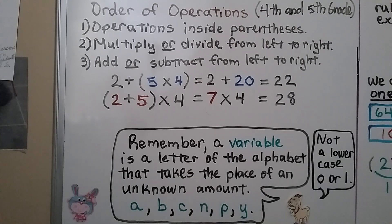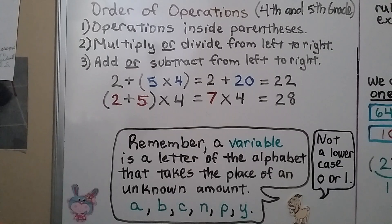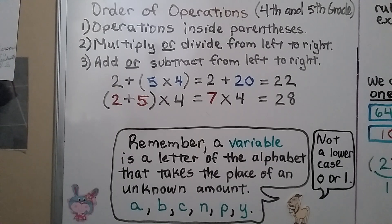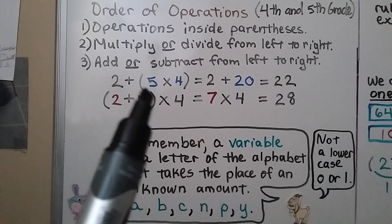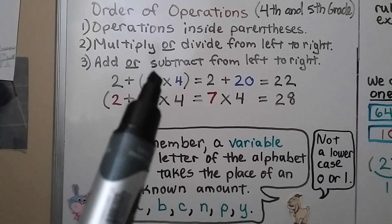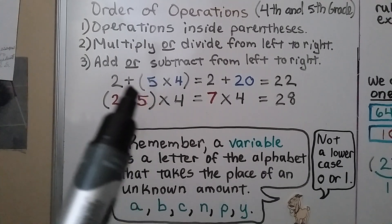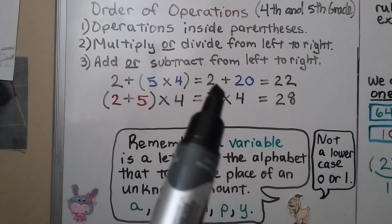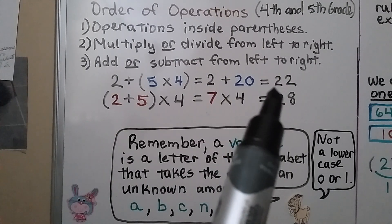The order of operations tells us: first, do operations inside parentheses; second, multiply or divide from left to right; and third, add or subtract from left to right. For example, 5 times 4 is in parentheses, so we do that first — 5 times 4 equals 20 — then 2 plus 20 equals 22.